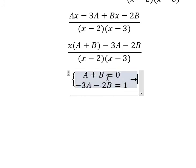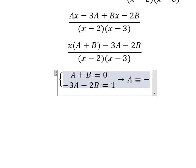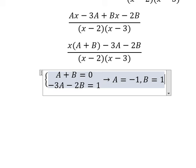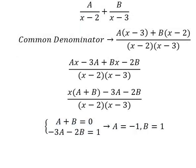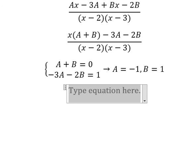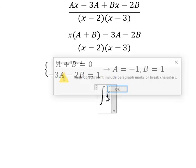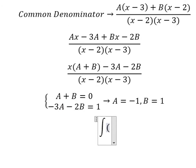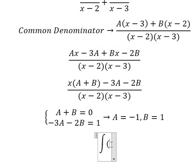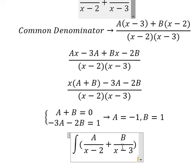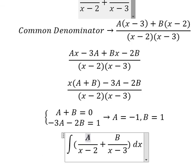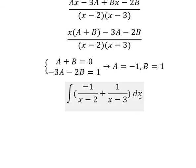Now we can find the solutions of A and B. So A equals to negative 1, B equals to 1. So we put the value in here. And now we have the final